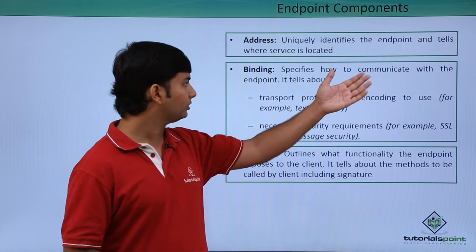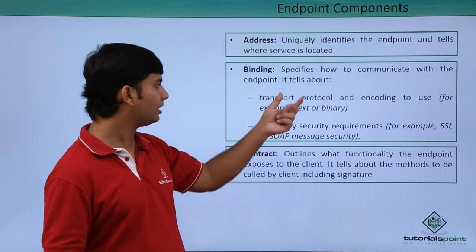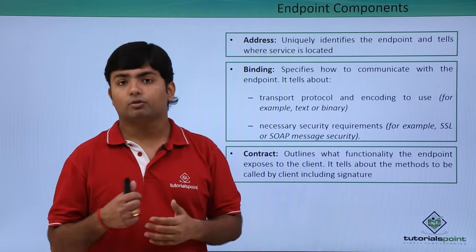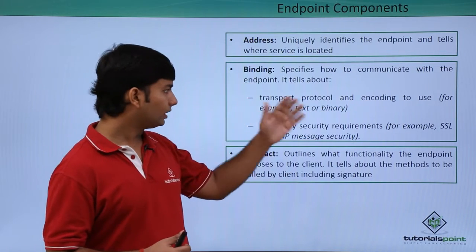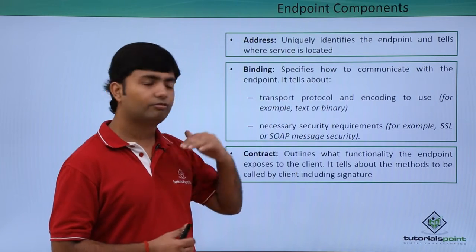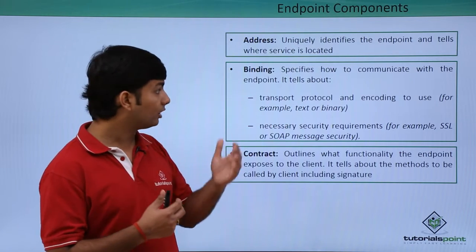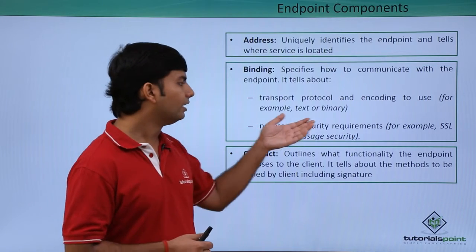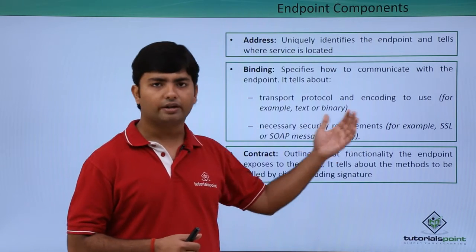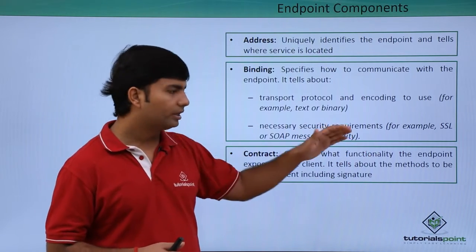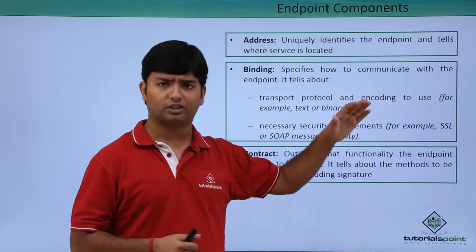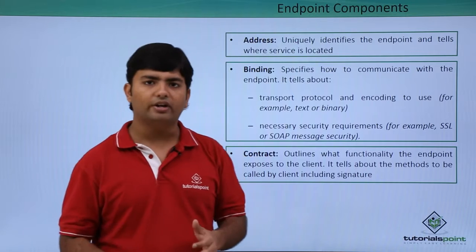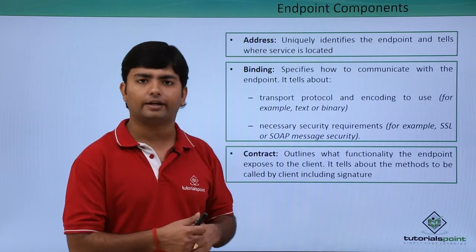Binding consists of two things: the transport protocol and encoding to be used — whether text or binary. The second thing is the security requirements, such as whether it is going to have SSL (Secured Socket Layer) or SOAP message security, and what kind of security it is going to contain.